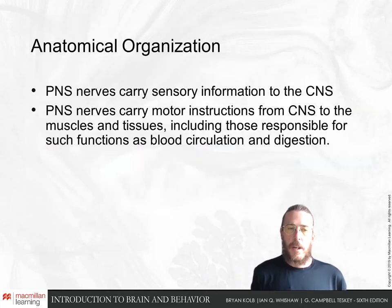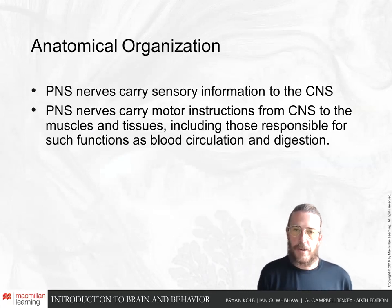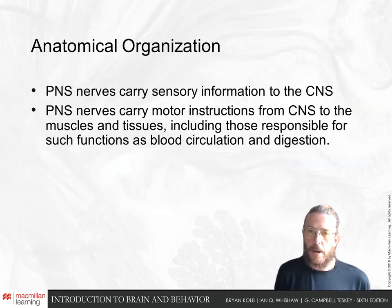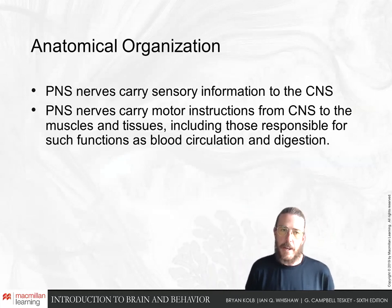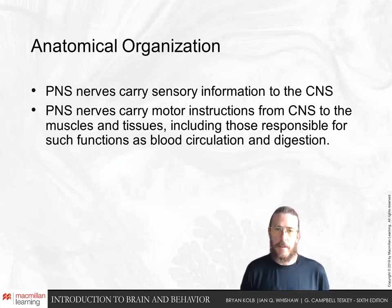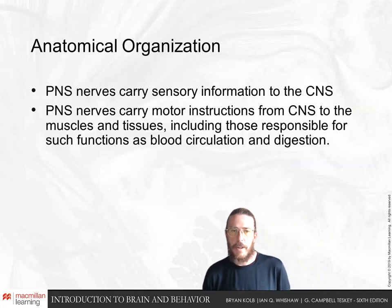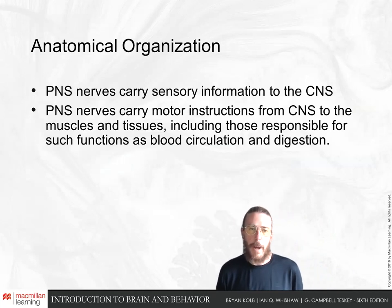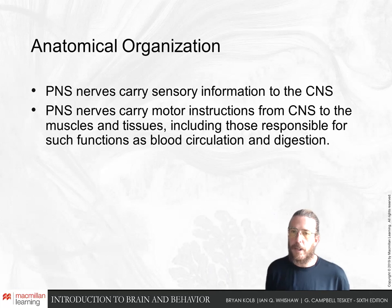The peripheral nervous system carries sensory information from our peripheral parts — our body, limbs, and face — into the central nervous system. The peripheral nerves also carry information from our central nervous system back out to our muscles and to our organs.